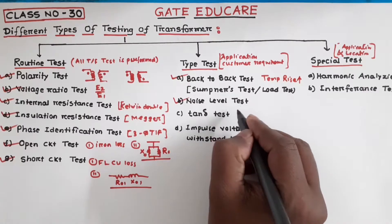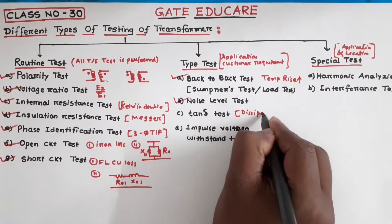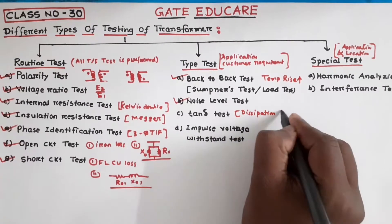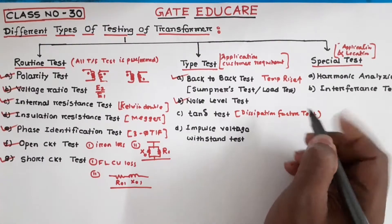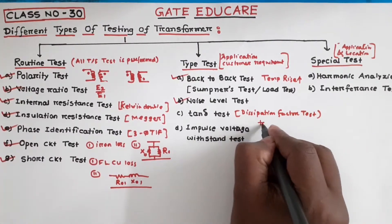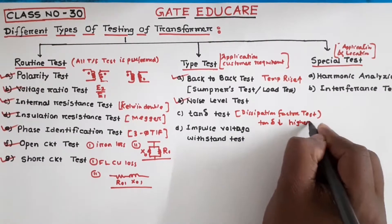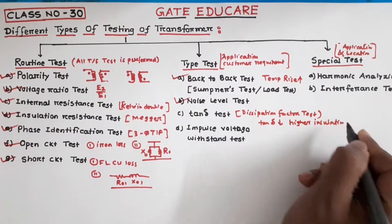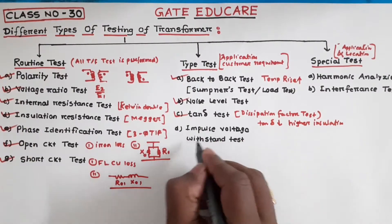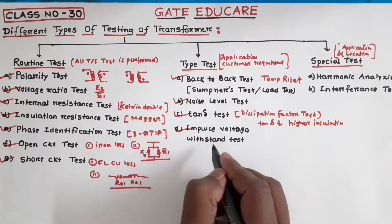Tan delta test: the tan delta test is generally a measure of insulation condition. It is also called the dissipation factor test. The lower the tan delta value, the higher the quality of the insulation. Next, the impulse voltage withstand test: how much impulse voltage the transformer can withstand is determined with this test.